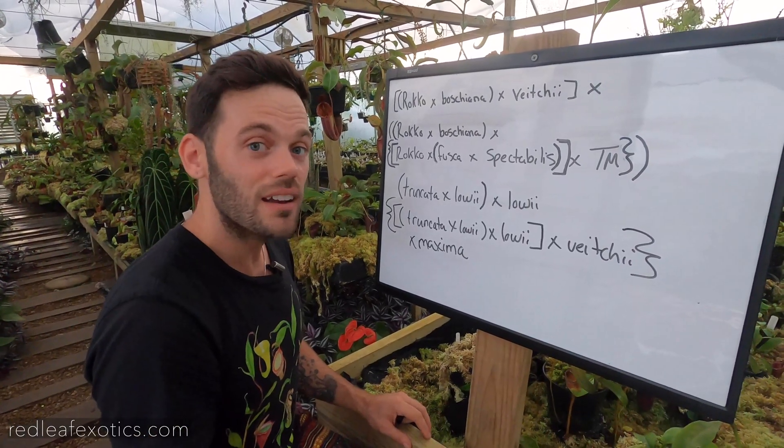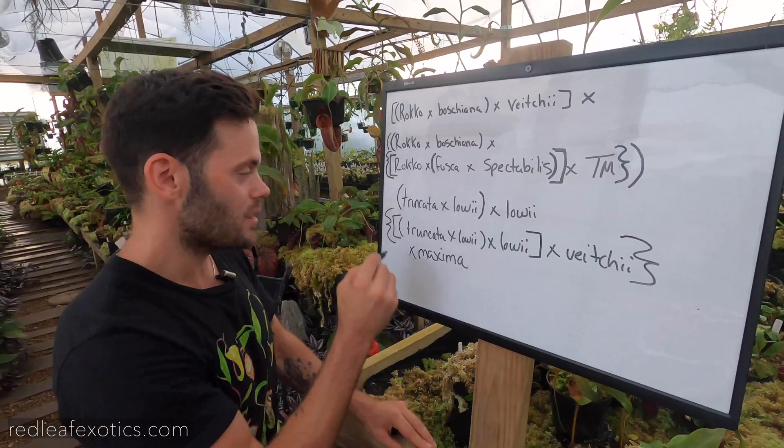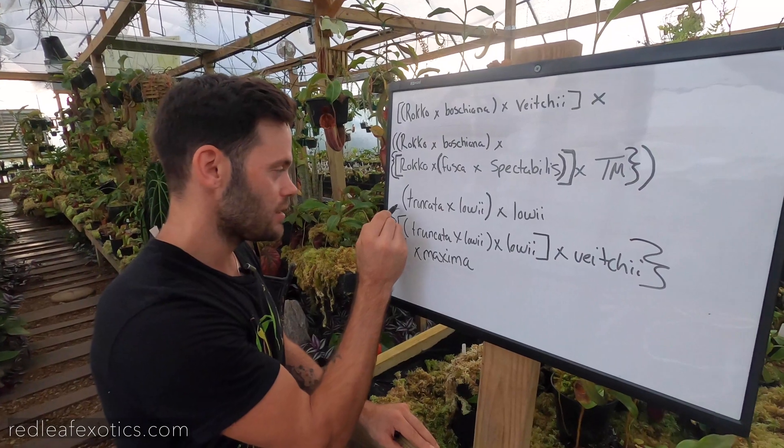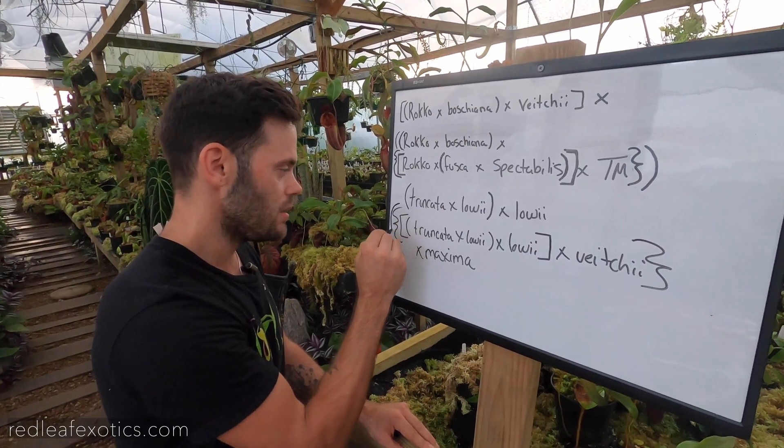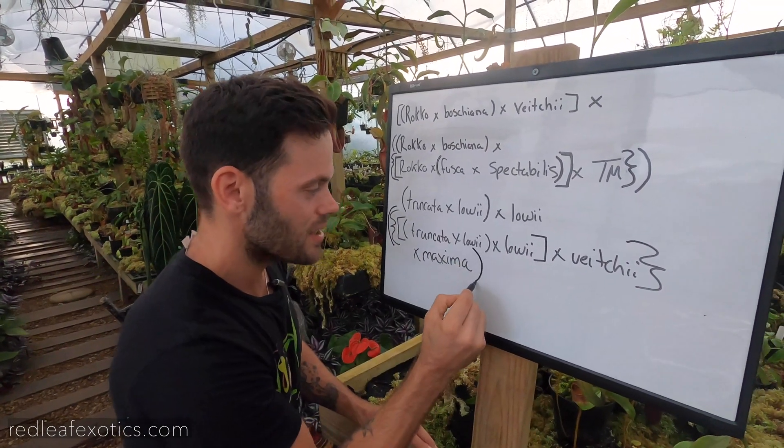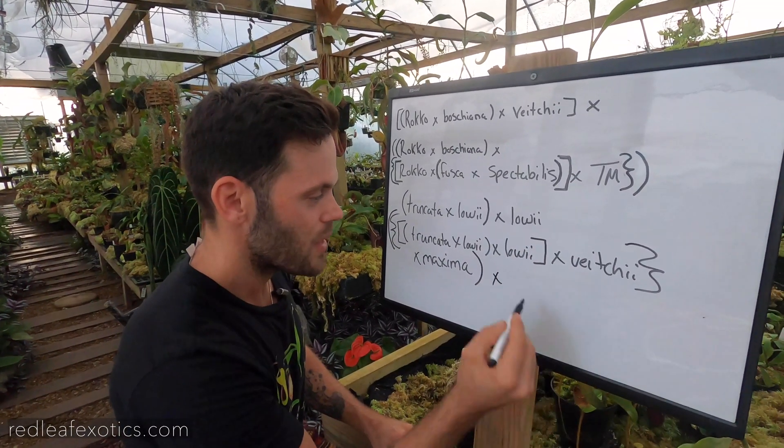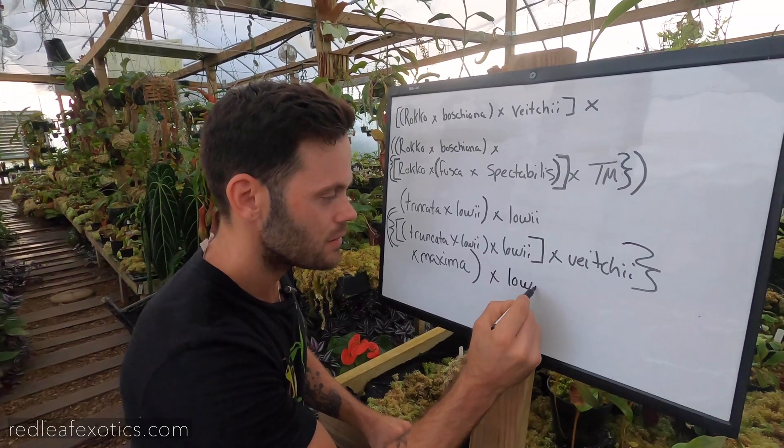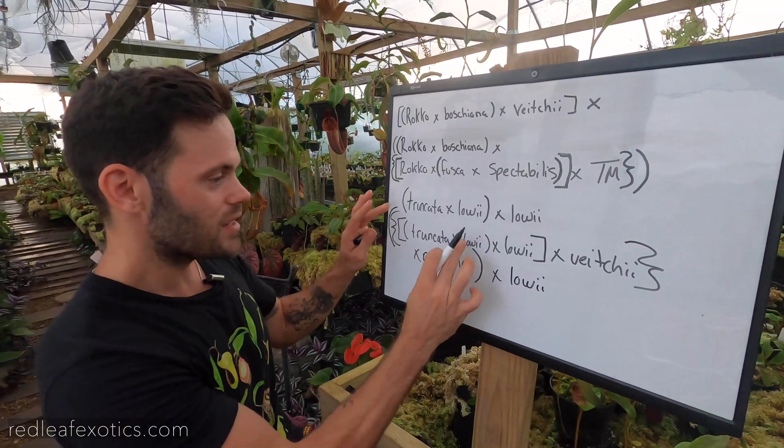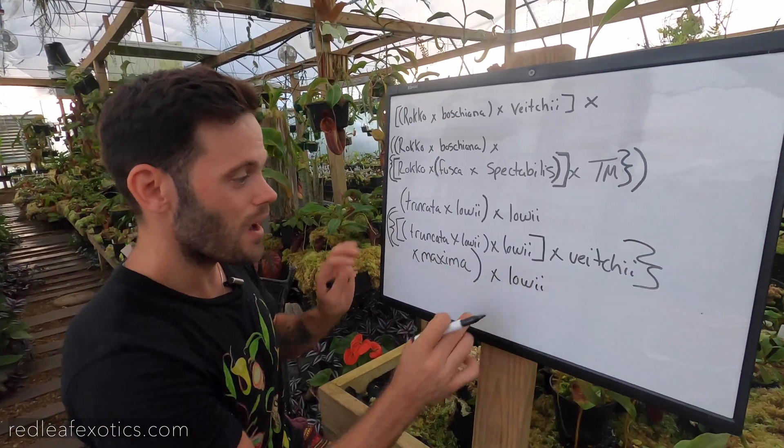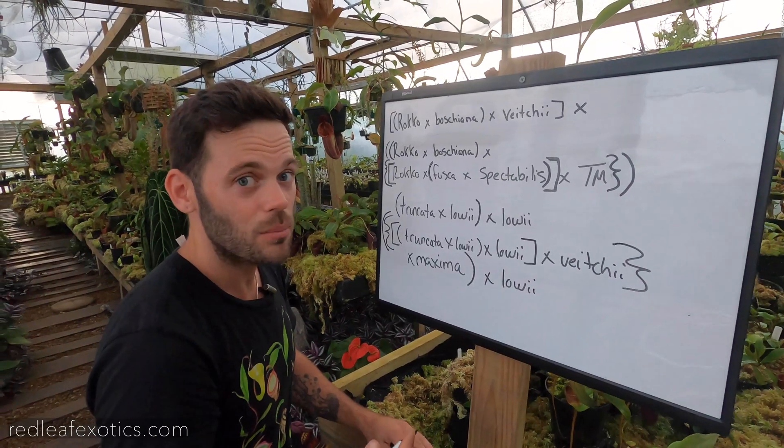You would then begin all the way, you would go all the way back to the beginning with your braces or your parentheses. I'm sorry. Right back to the beginning. This whole thing, I'm now going to cross with Lowei again. So I have this big hybrid cross with Lowei, and then you're just going to keep going.